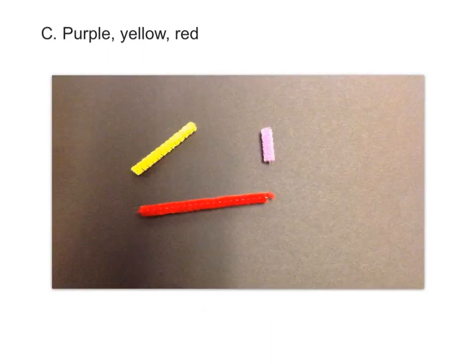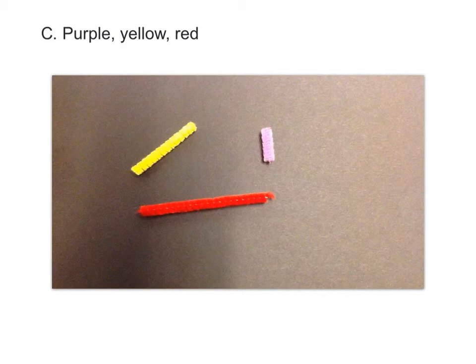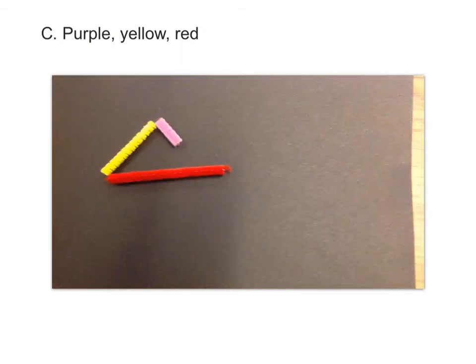For the letter C, we're going to be using the purple, yellow, and red pipe cleaners. And again, we aren't going to be bending any of the pipe cleaners. We're just going to move them to try to make a triangle. So gather your pipe cleaners and arrange them, if you can, to make a triangle.